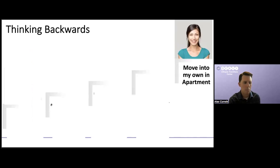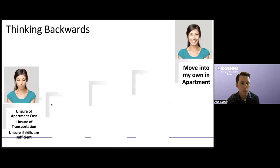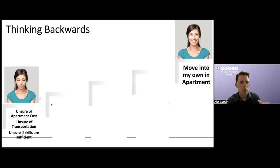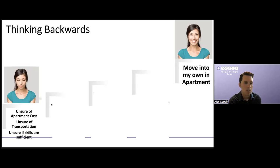Another real-world example we use, especially for our transition age youth and some of our adults who maybe are living in the family home, is moving into your own apartment. We kind of want to identify that end goal. The very next step is we need to understand where we are now — what's our baseline, what's our current situation, what skills might be needed for our outcome or end goal? A backwards plan could start with being unsure of apartment costs, unsure of transportation, how to get to and from home, maybe to a job, and unsure if my skills are sufficient to live in my own apartment.